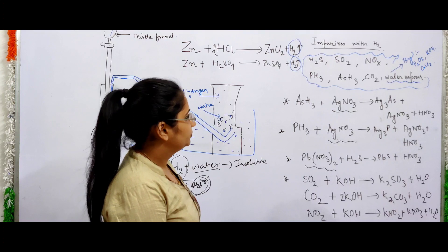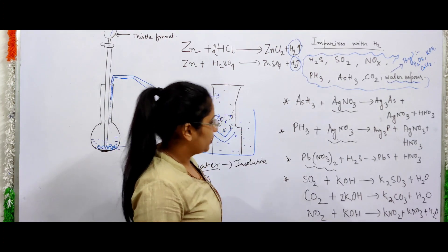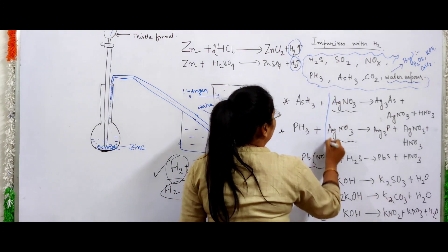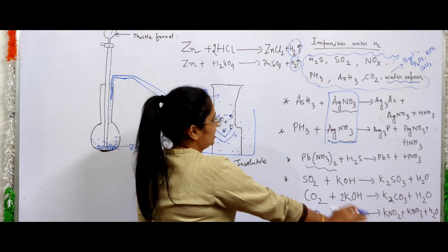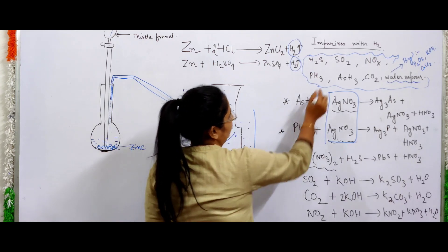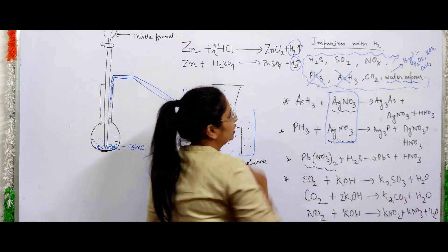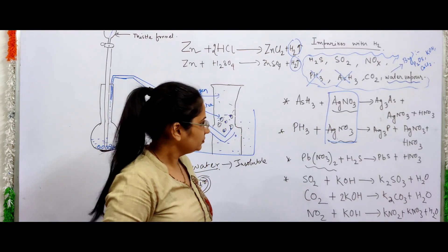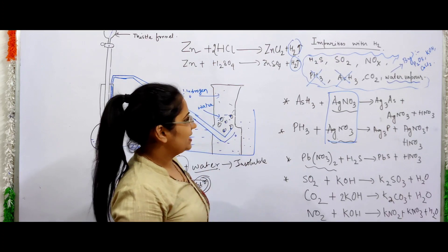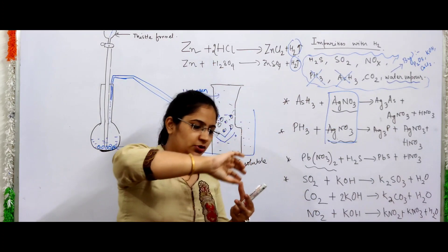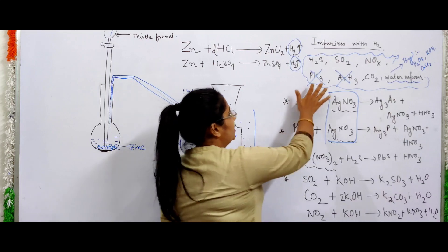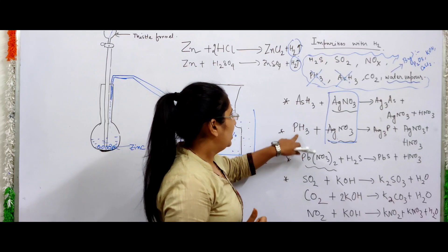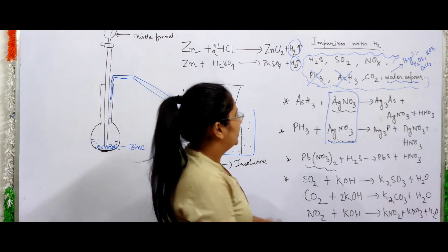We can remove two impurities — arsenic hydride and phosphine — using silver nitrate solution. If we pass the gas through silver nitrate solution, phosphine and arsenic hydride will react with it.